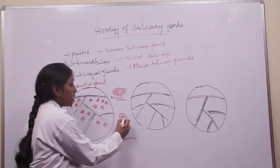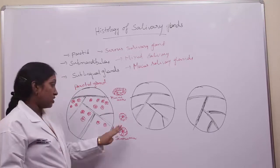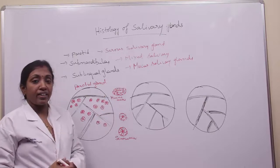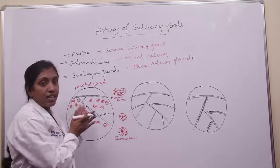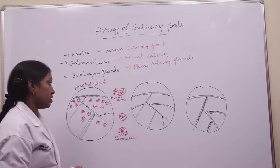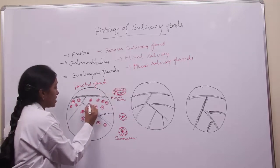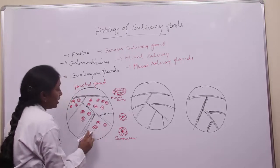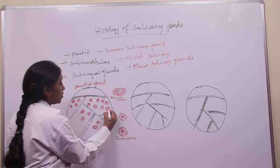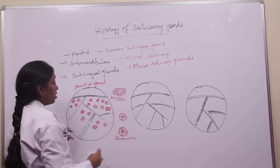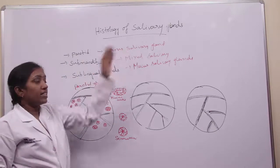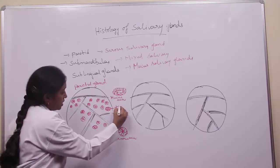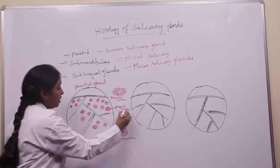In summary: serous acini have a very small lumen with triangular-shaped cells, the nucleus is round and situated at the base, and the apex of the cell consists of more number of zymogen granules. Mucous acini have a large lumen with cuboidal cells, and the nucleus is flattened and situated at the base due to accumulation of mucus. In the parotid gland, along with the more numerous serous acini, you will see very few mucous acini.